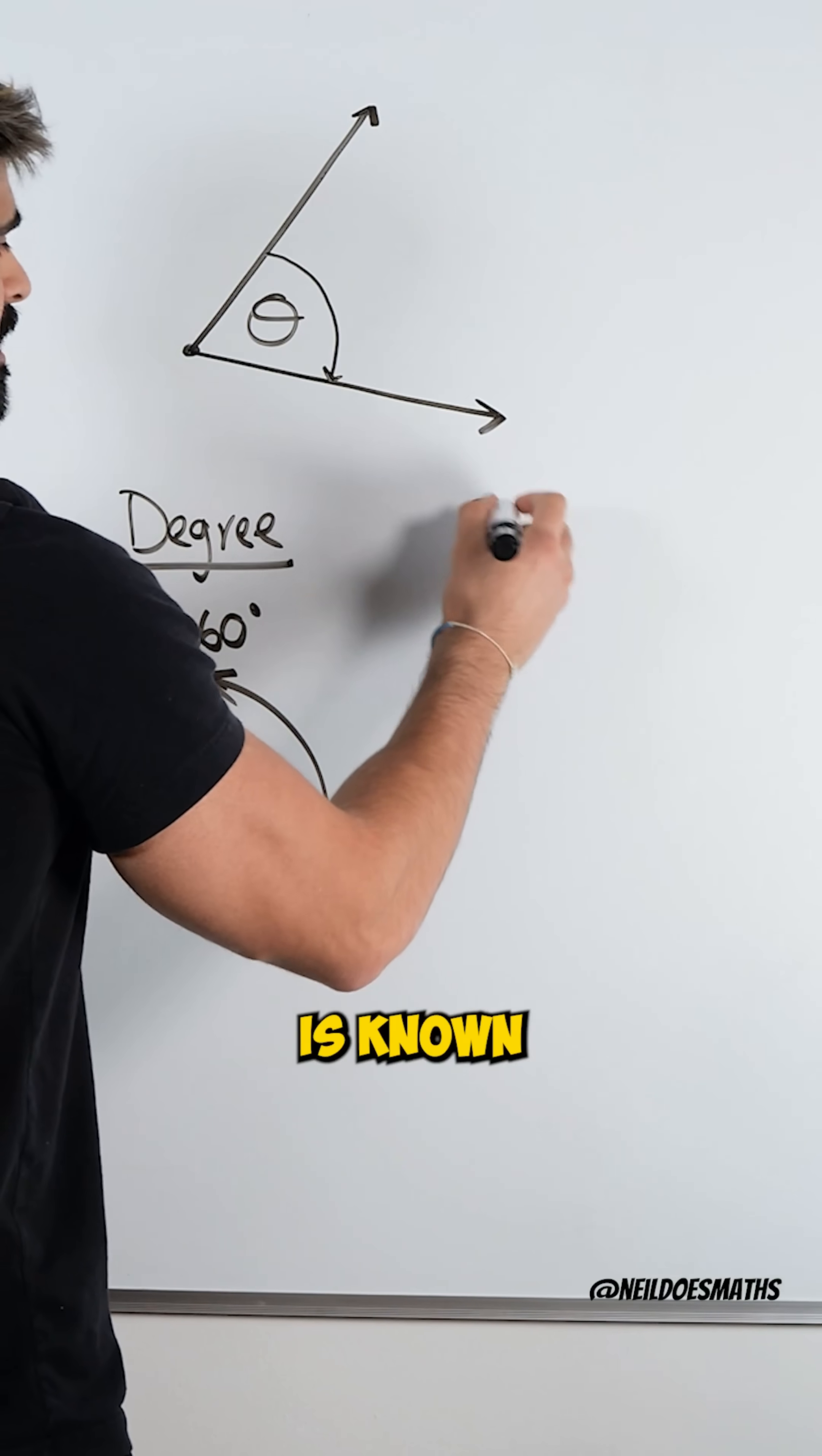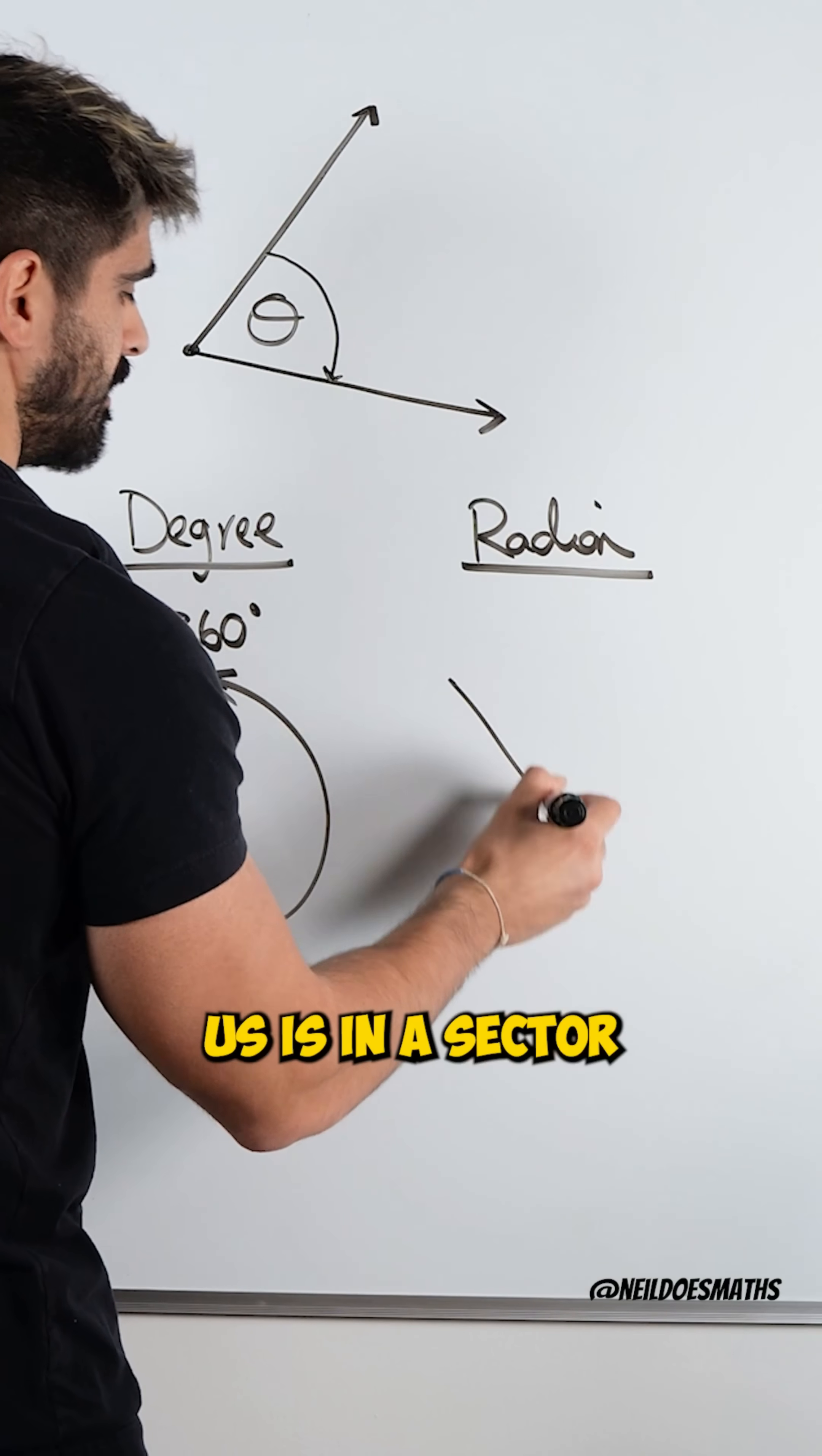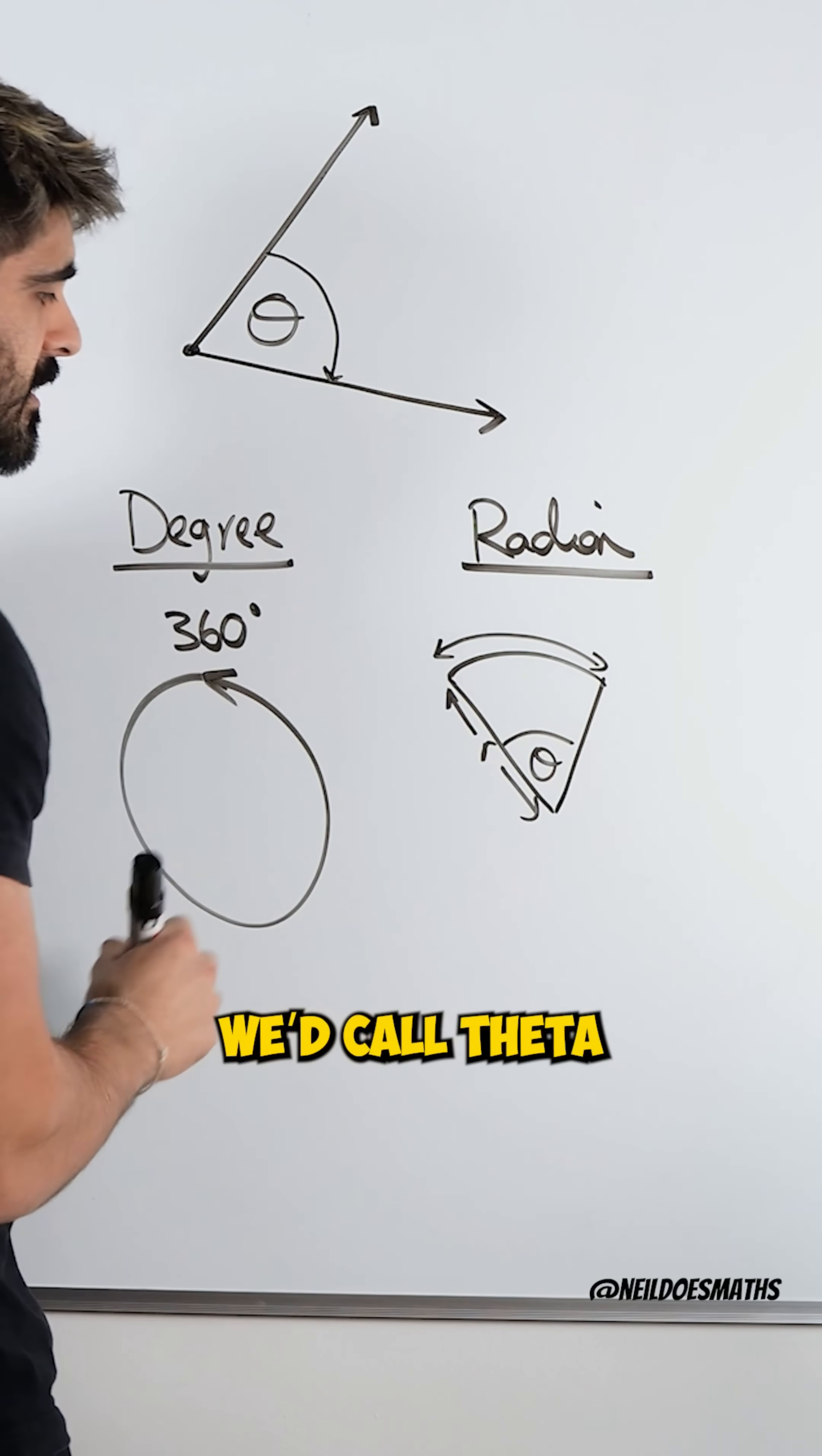Now the other way is known as a radian. Now what does a radian measure? A radian is a unitless measurement. Degree has a unit. This is unitless. And the only question it asks us is: in a sector of a circle, sector meaning part of a circle, how many times bigger is this arc length relative to the radius? This angle we would call theta.